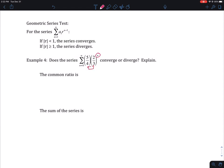So what you do is you look at the thing that has the n is the exponent, so that two-thirds. And if that two-thirds is between negative one and positive one, the series converges.